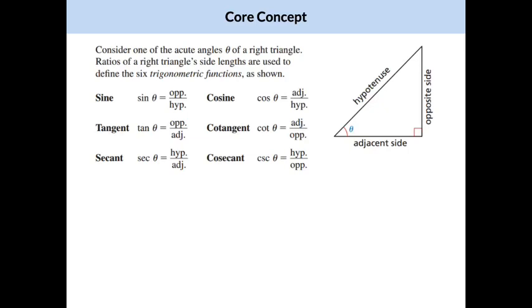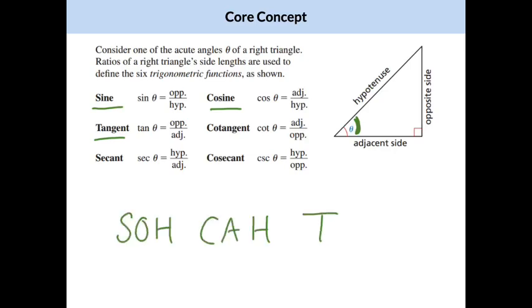The first core concept is how we define sine, cosine, and tangent — three trig functions you should be really familiar with. The sine of angle theta is defined as the side length opposite divided by the hypotenuse. Cosine is adjacent over hypotenuse. Tangent is opposite over adjacent. You might remember this from geometry as SOH-CAH-TOA.